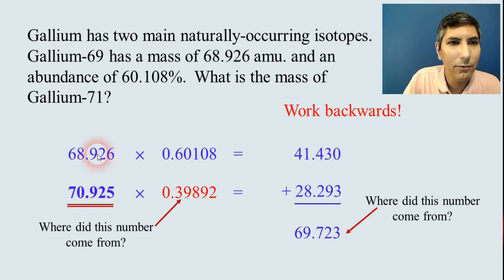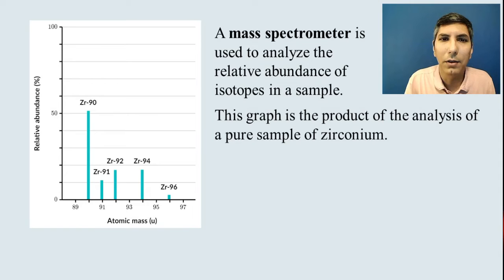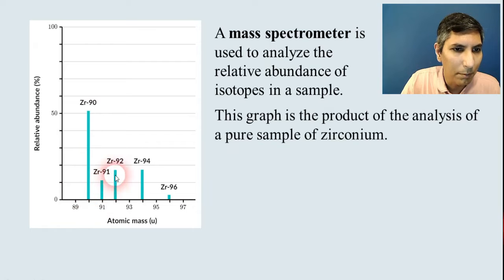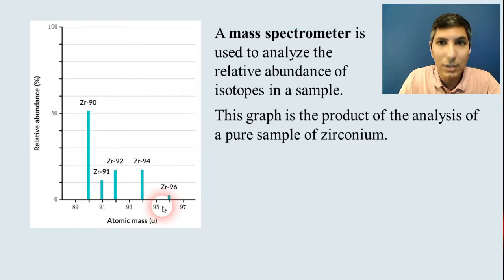Now, you might wonder, how do we get these numbers? How do we figure out the mass of an isotope? Because you can't really take an atom, an individual atom, and place it on a little teeny tiny scale and figure out its mass. That would be ridiculous. Well, we have an instrument that helps us to analyze the relative abundance of isotopes in a sample. This is how we get these values. This is called a mass spectrometer, or sometimes a mass spec for short. We can get a little graph here that shows us the analysis. So, we have the relative abundances here. It shows each little bar on the graph represents a different isotope.